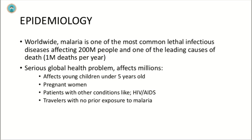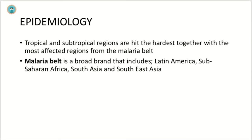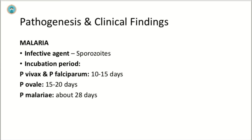Epidemiologically, malaria is one of the most common lethal infectious diseases worldwide, affecting 200 million people and causing approximately 1 million deaths per year — a serious global health problem. It particularly affects young children under 5 years old, pregnant women, patients with conditions like AIDS, and travelers with no prior exposure. Tropical and subtropical regions are hardest hit, particularly the malaria belt — a broad band including Latin America, sub-Saharan Africa, South Asia, and Southeast Asia.